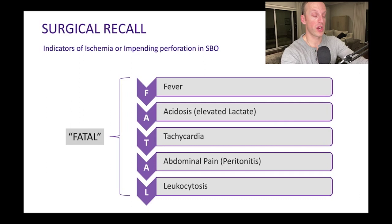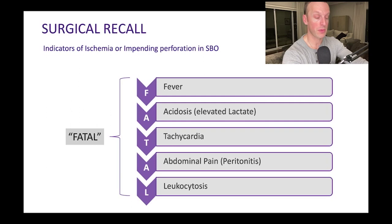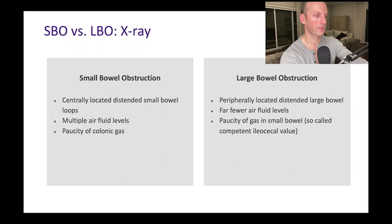Here's a useful acronym for indicators of pending ischemia or perforation: FATAL. Fever, lactic Acidosis, Tachycardia, severe Abdominal pain (peritonitis), and elevated white count — Leukocytosis. Those are red flag signs. If you see a patient with small bowel obstruction with those features, be concerned — this patient may have ischemic small bowel or impending perforation.